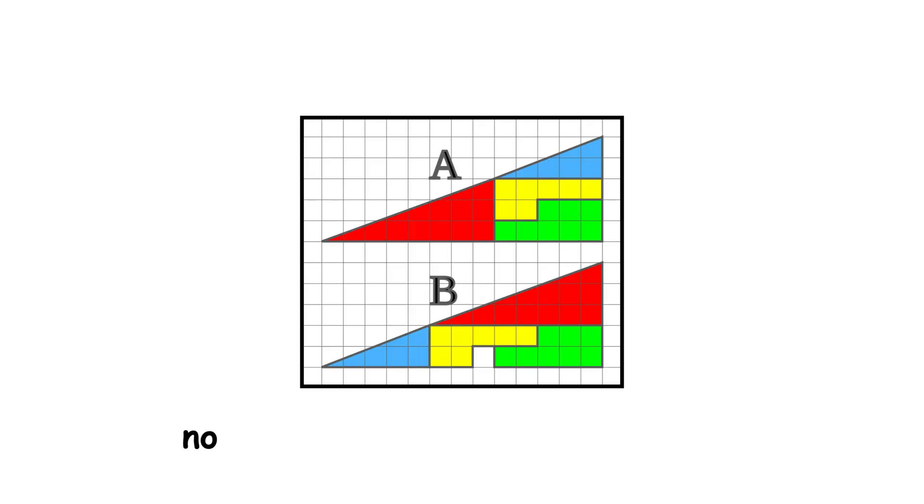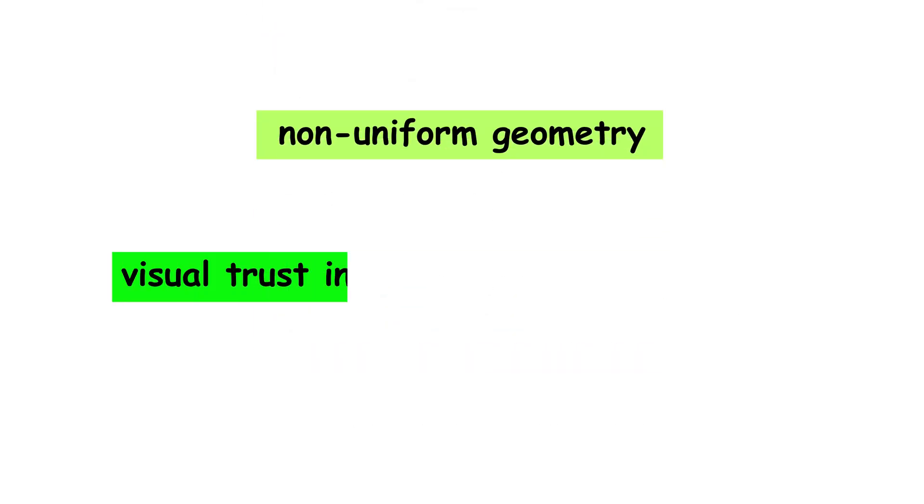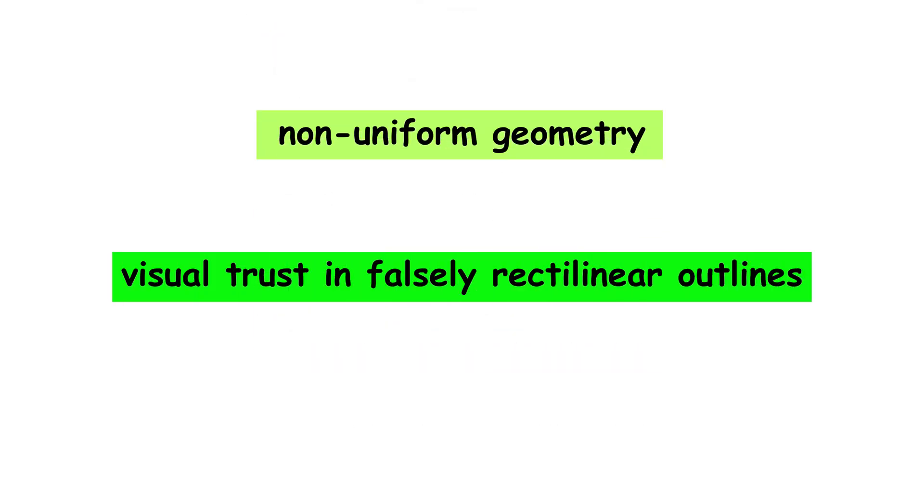In summary, there is no paradox or actual loss of area. There is an illusion caused by non-uniform geometry and visual trust in falsely rectilinear outlines.